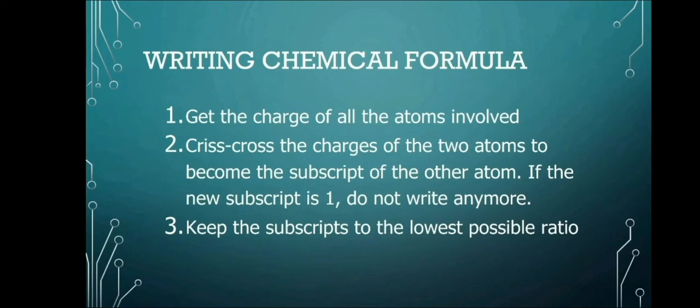So in writing chemical formula, number 1, we get the charge of all atoms involved. Number 2, we crisscross the charges of the two atoms to become the subscript of the other atom. If the new subscript is 1, do not write anymore. We just write it as NaCl. Number 3, keep the subscript to the lowest possible ratio.